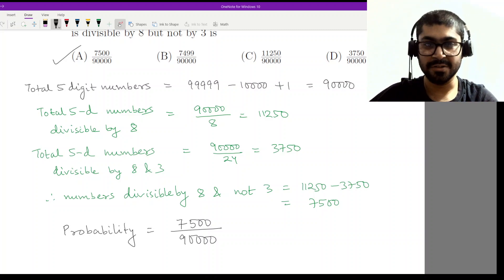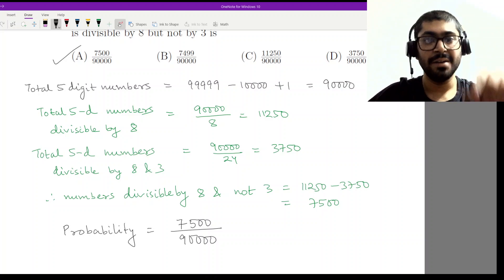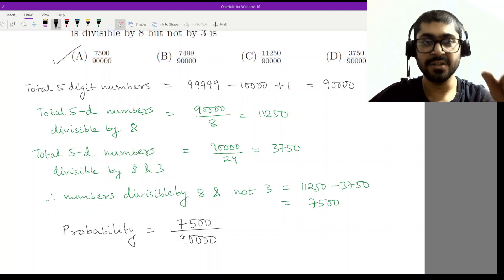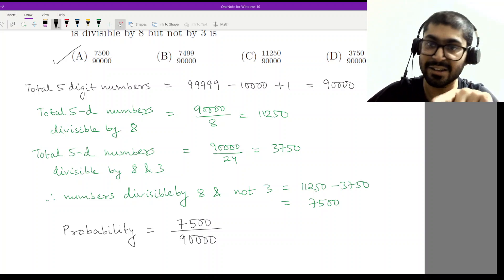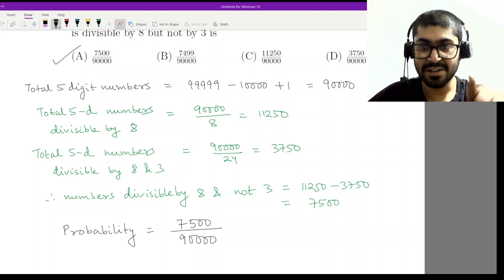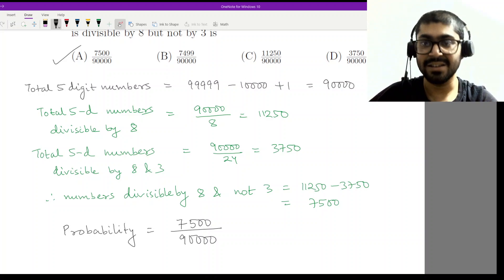Let us recap what we did. We first calculated the total number of five-digit numbers. Why did we do plus one? Because we are also considering the endpoint. It starts from 10,000 and ends at 99,999 but also includes that one, so plus one gives us 90,000. Five-digit numbers divisible by 8: we have 11,250. The number of five-digit numbers divisible by 8 and 3 is 3,750. If I subtract this, I'll get the numbers that are only divisible by 8 and not 3, because the multiples of 24 have been crossed out.